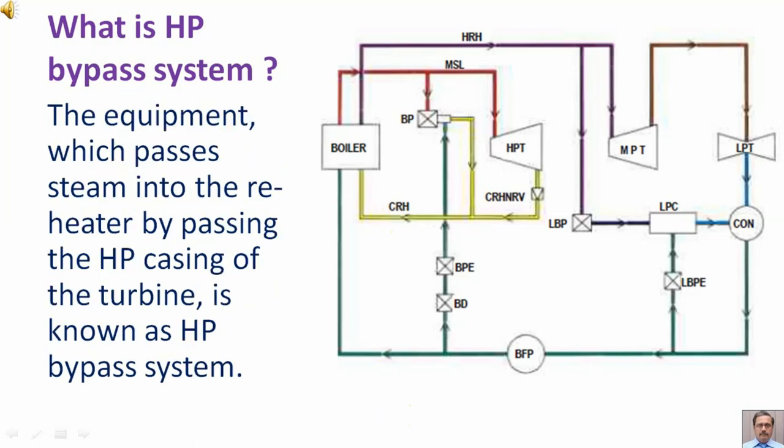What is HP bypass system? The equipment which passes steam into the reheater by passing the high pressure casing of the turbine is known as HP bypass system.